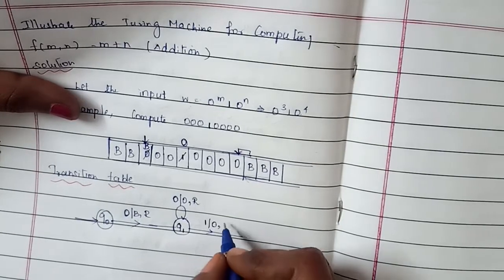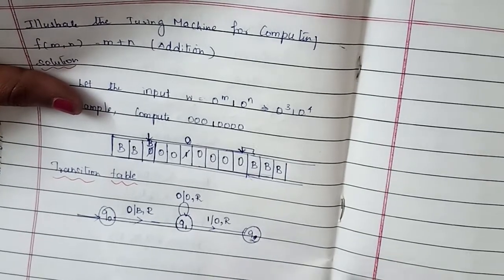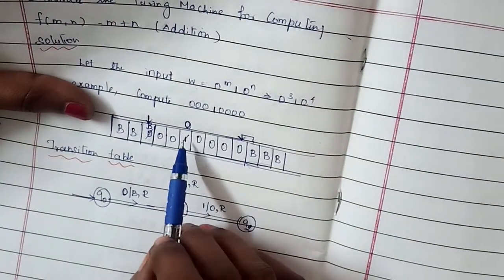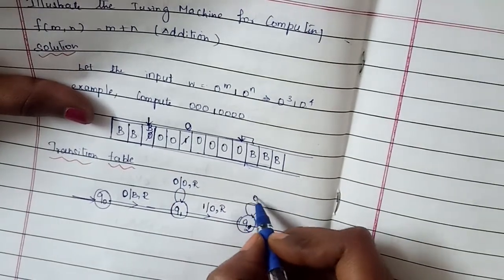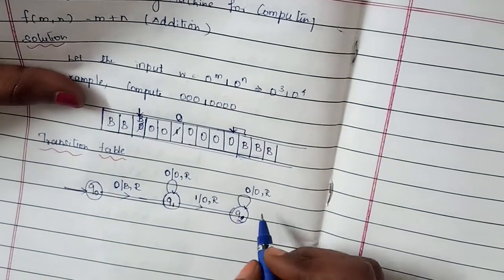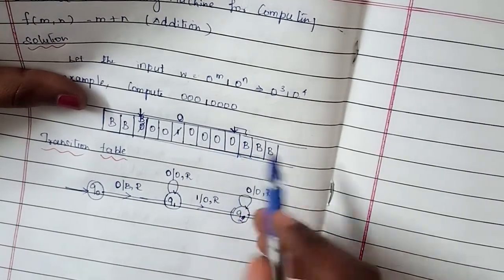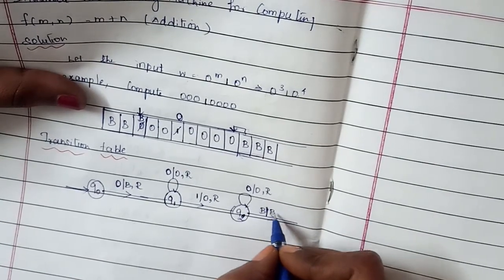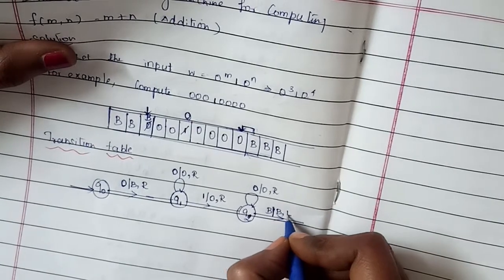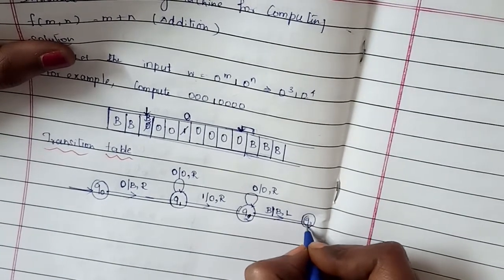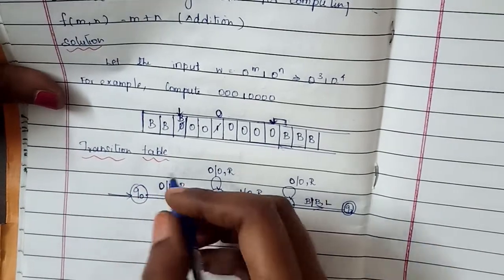When a 1 is encountered in state q1, it is replaced by 0 and the machine moves right, transitioning to state q2. In state q2, whatever zeros come, the machine stays in q2 and moves right. When the machine reaches the blank symbol after the input string, it moves in the backward (left) direction to reach the end of the string.